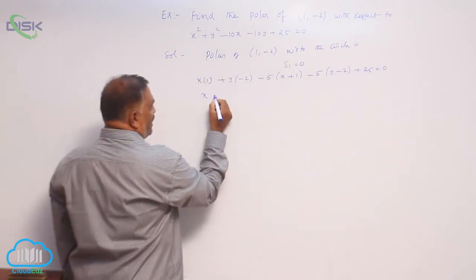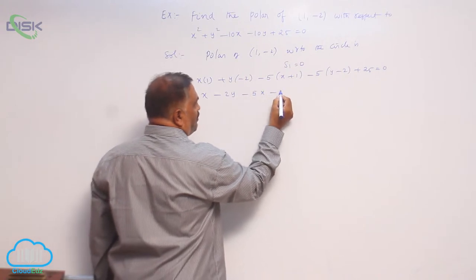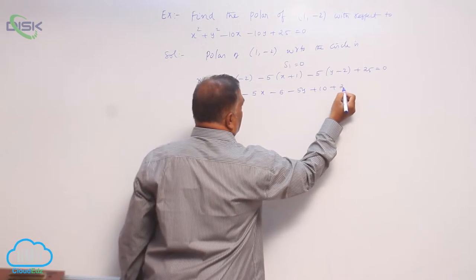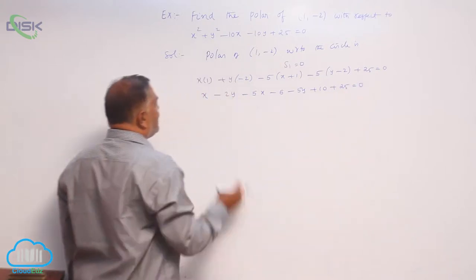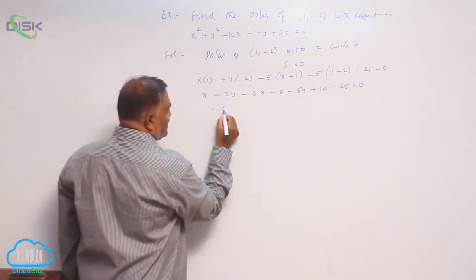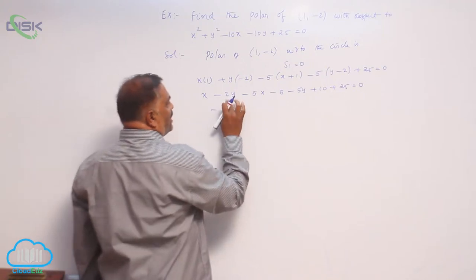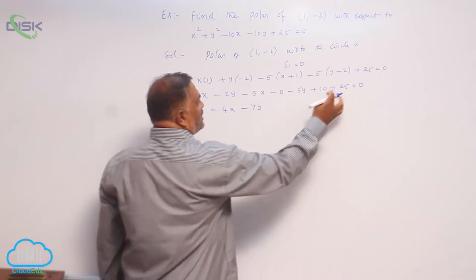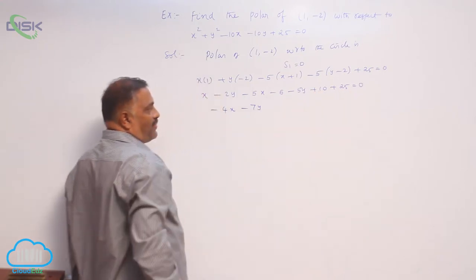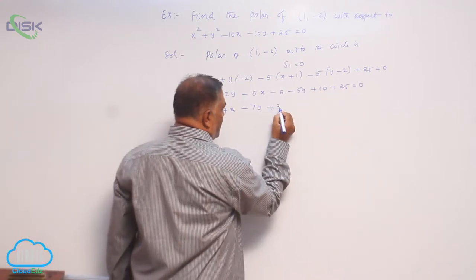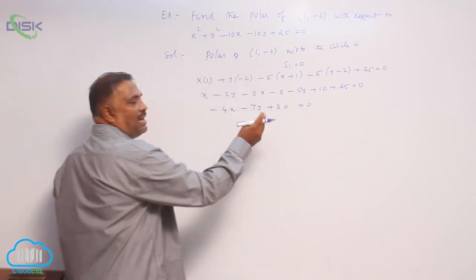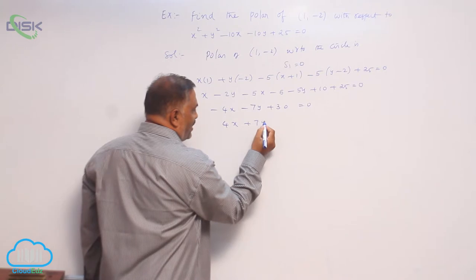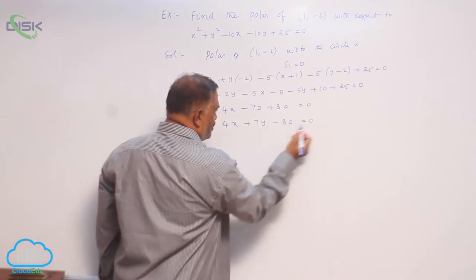x plus minus 2y minus 5x minus 5 minus 5y plus 10 plus 25 is equal to 0. x and minus 5x is minus 4x, minus 2y minus 5y is minus 7y, 25 plus 10 is 35, this is plus 30 equals 0. Multiplying throughout by negative sign we get 4x plus 7y minus 30 is equal to 0.